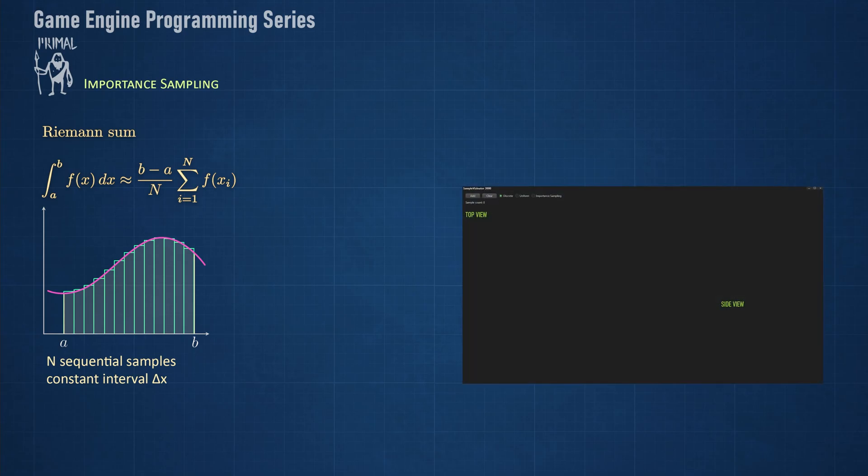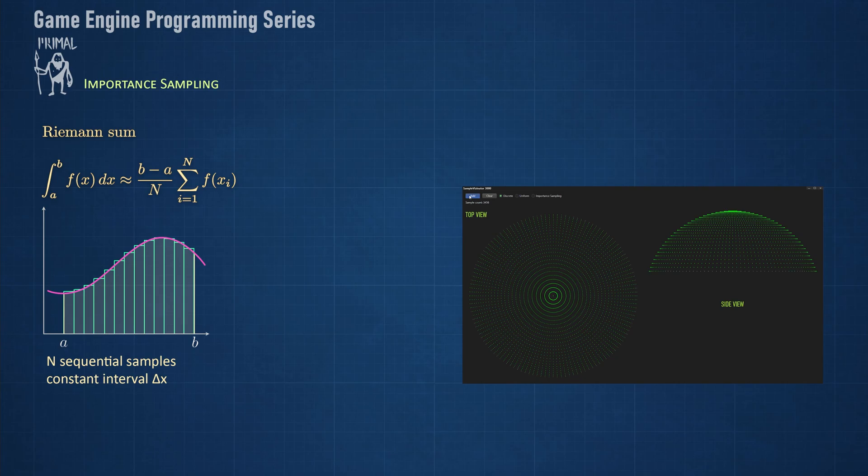The higher the number of samples, the closer the approximation will be to the actual area. The samples are taken sequentially using a fixed interval. This is basically a constant resolution at which we evaluate this integral. However, sometimes we'd like to use a higher resolution for parts of the graph that have a higher contribution to the result and are therefore more important than parts that contribute less.